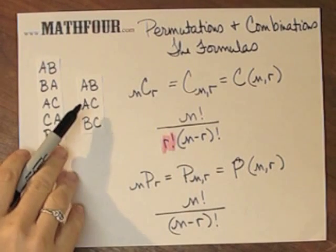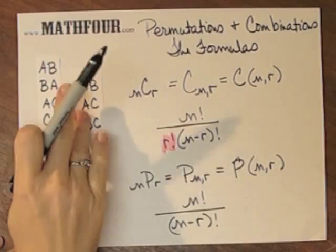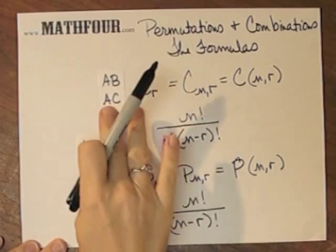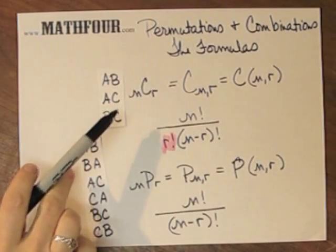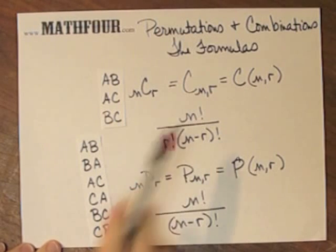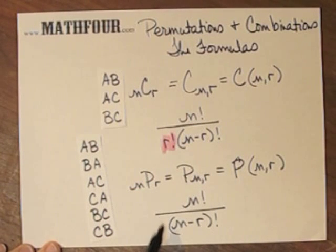And if you'll notice, when you do a combination here, this is the permutation, combination, you divide out a few that you don't divide out here.